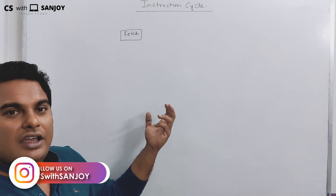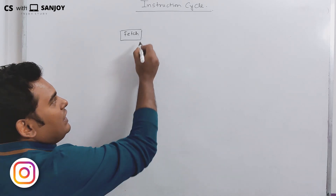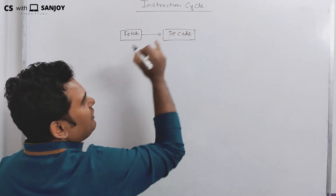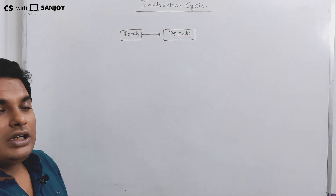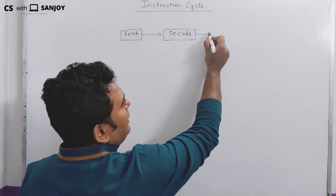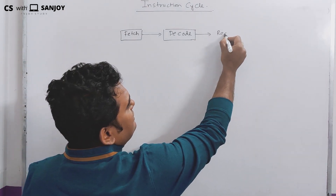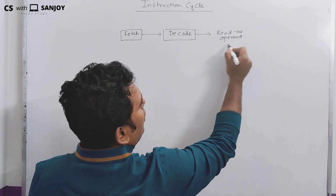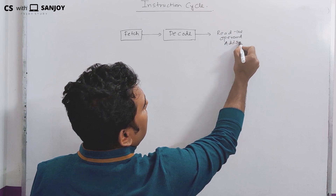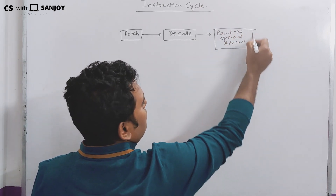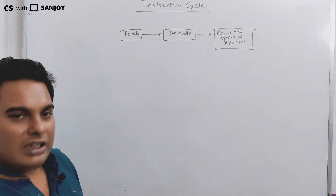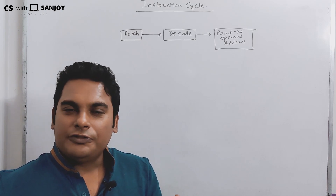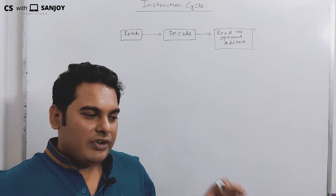The first phase is to fetch the instruction from memory. Then the next phase is to decode the instruction. After decoding, the next phase is to read the operand address. Then the final phase is to perform the operation — execute.